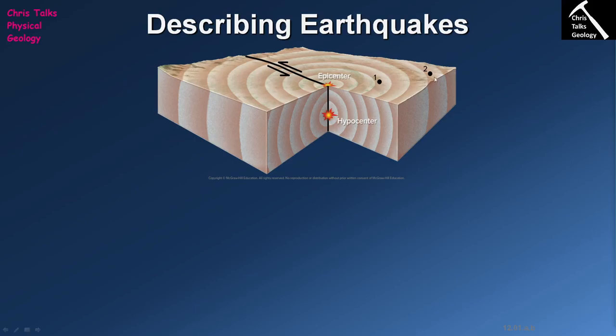If we look on our slide here we can see we have a situation where we have two blocks of rock that are trying to move past each other — we have a strike-slip fault. This block of rock is trying to move towards the bottom right and this block is trying to move towards the top left. These blocks want to move past each other because there are tectonic forces which are pushing them.